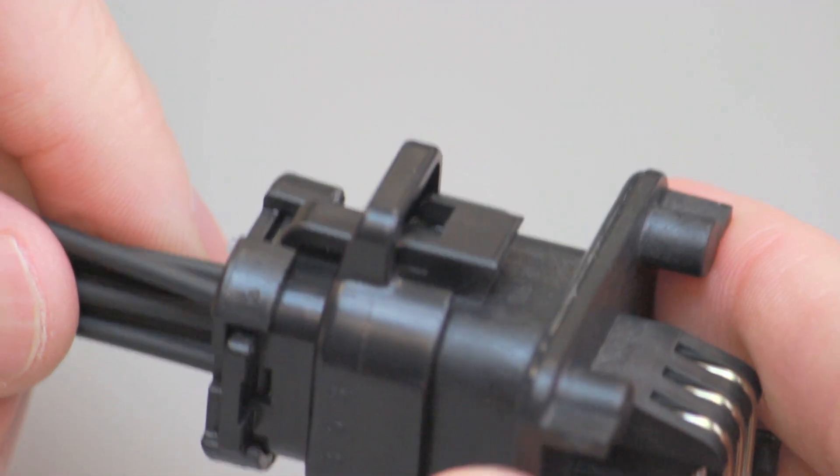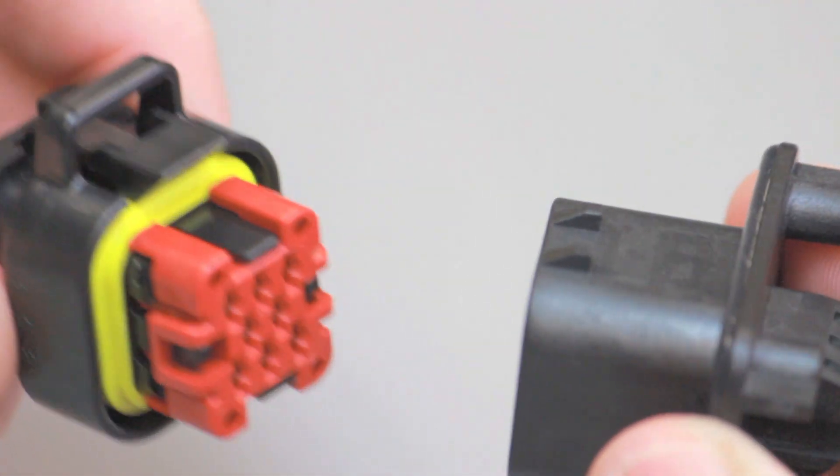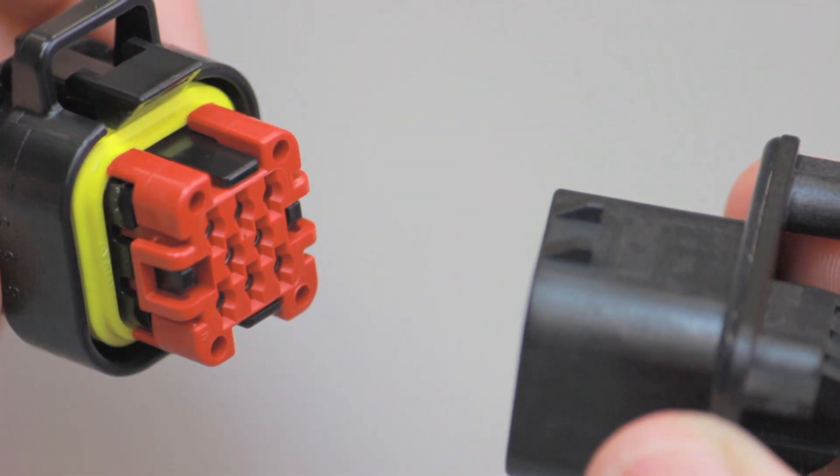To unmate amp seal connectors, lift the locking latch on the outside of the receptacle contact housing while pulling it apart from the PCB header.